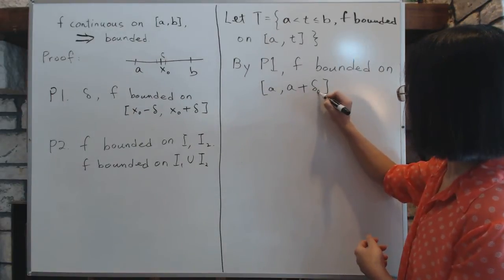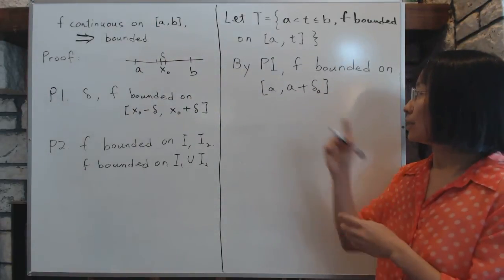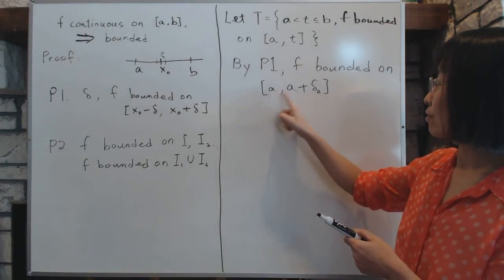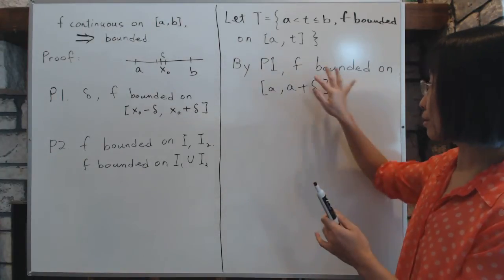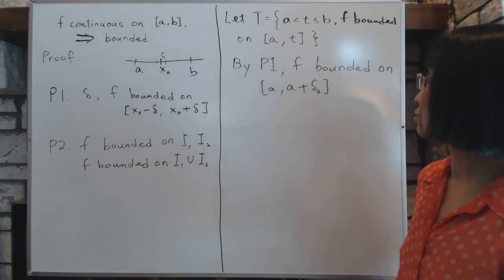This delta is dependent on a. And sometimes the book calls it delta of a, or delta subscript a. So going from a to that little bit more is going to be bounded by principle one, again, because f is continuous.